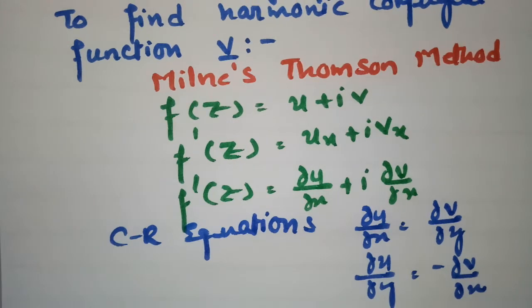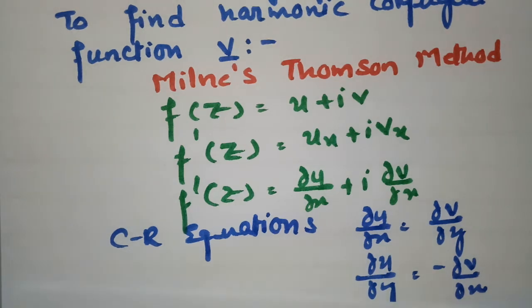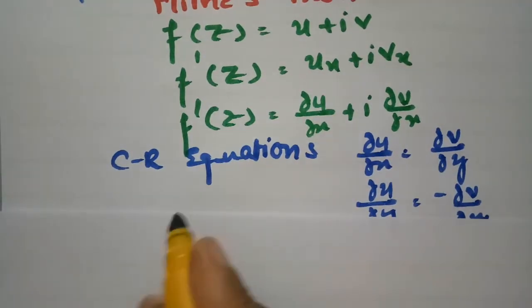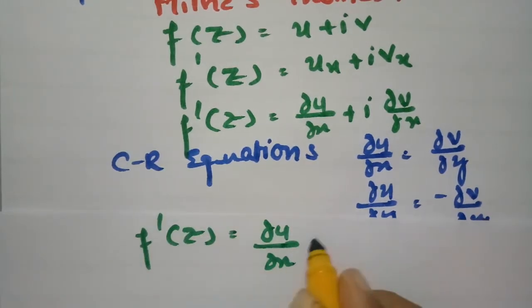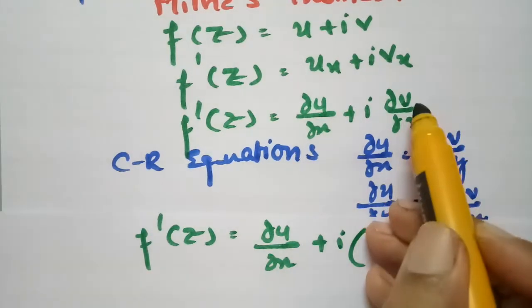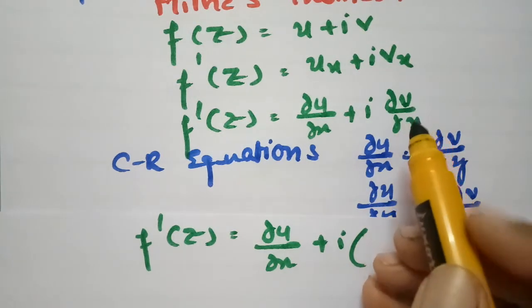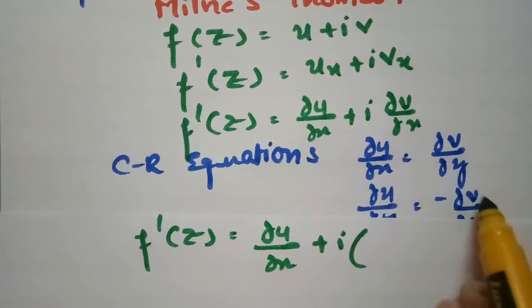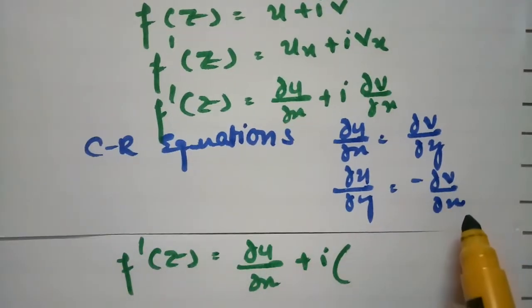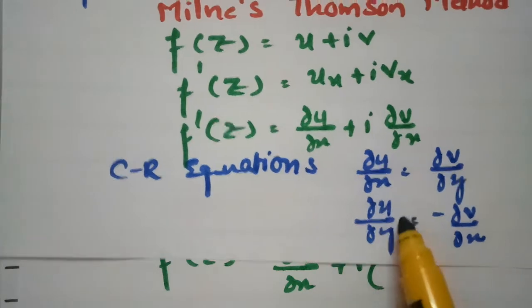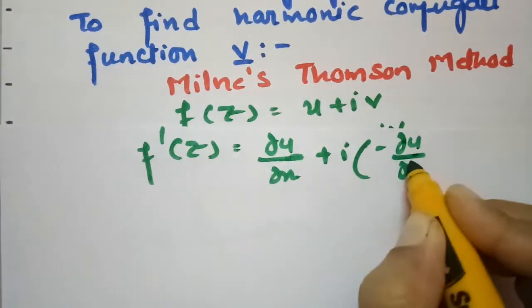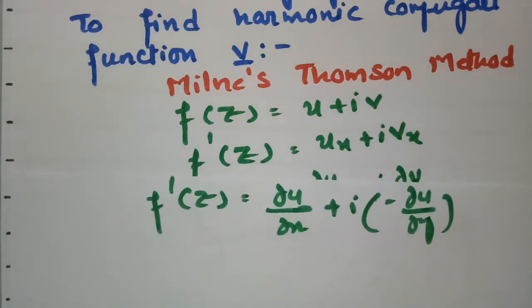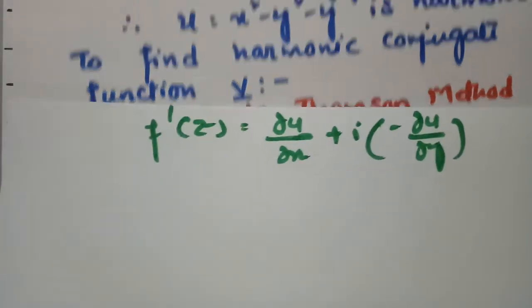In place of ∂v/∂x, I am going to write -∂u/∂y using the CR equations. So f'(z) becomes ∂u/∂x + i·(-∂u/∂y). Now substituting: ∂u/∂x is 2x and -∂u/∂y is -(-2y - 1), which is (2y + 1).